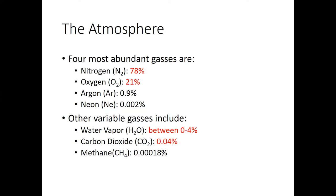Contrary to popular belief, oxygen is not the most abundant gas. The most abundant gas is nitrogen, making up 78% of the air we breathe. Right now the air surrounding you is 78% nitrogen. Another 21% is oxygen, and another 0.9% is argon. So 99% of the air you're breathing right now is made up of these three things.